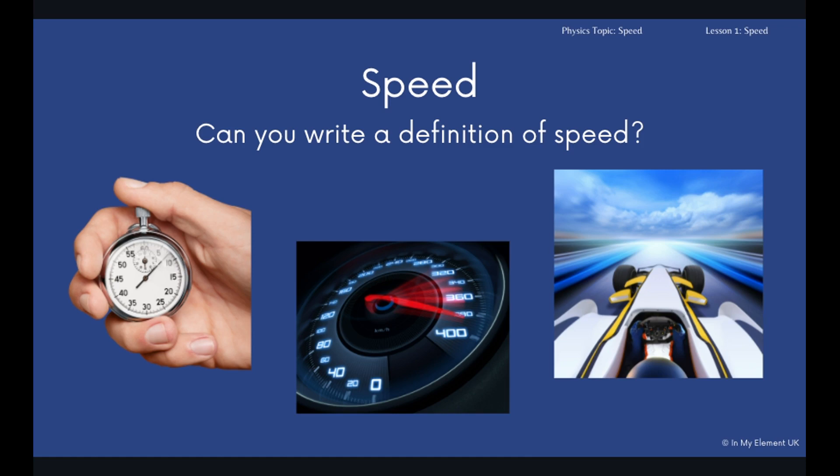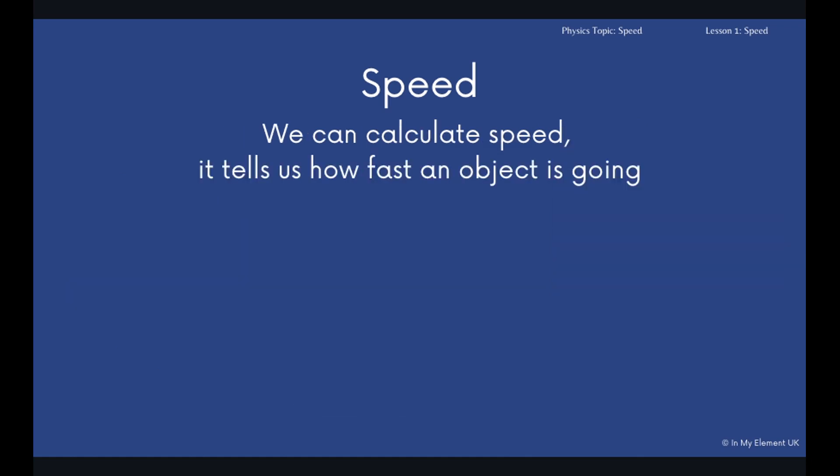You've got three images there: one of an old-fashioned stopwatch timer, one of a speedometer, and one of a car. What would you say speed is? When we calculate speed, which is what we're going to do, it tells us how fast an object is going. Doesn't matter what that object is. That is what speed calculates.